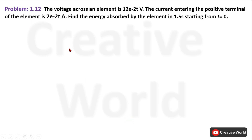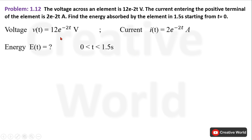In the next problem 1.12, the voltage across an element is equal to 12e^(-2t). The current entering the positive terminal of the element is 2e^(-2t) ampere. Find the energy absorbed by the element in 1.5 seconds starting from 0. So we need to calculate the energy from 0 to 1.5 seconds. This data is given in the scenario and we need to calculate the energy.